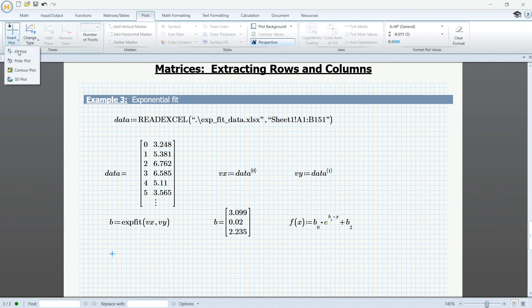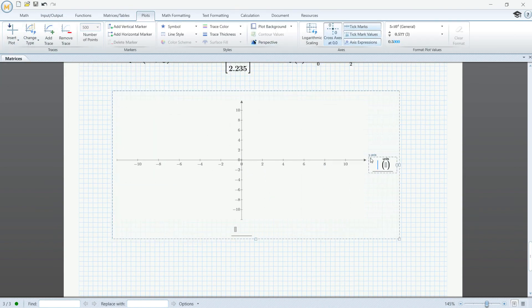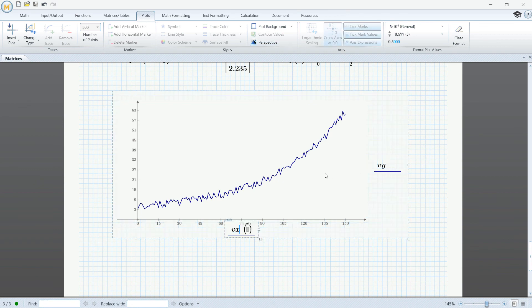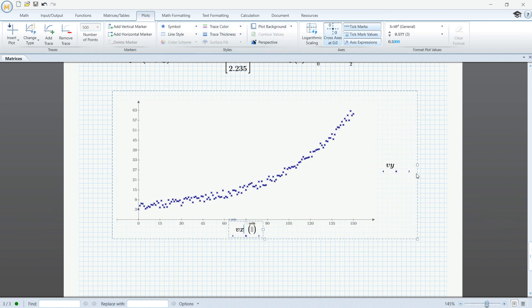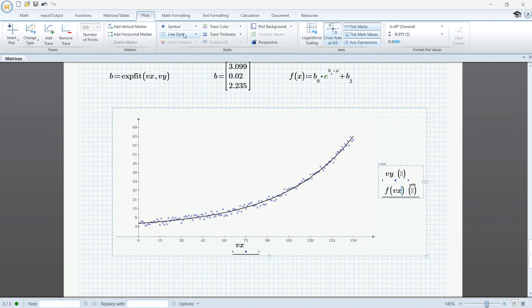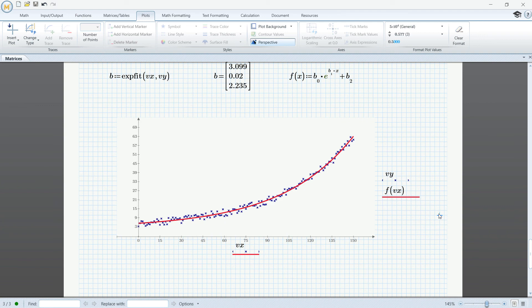The next step would be to go to the plots tab, insert plot XY plot and we're going to use this to visualize the data. So, first we can go here and plot the two vectors, VY and VX, so we can visualize the data points that we started from. I'm going to go here to symbol and remove the line so we can see the actual points and what we can do next is add another trace here and type F of VX which is the fitting function that we defined previously and we can go here and change the color of it and change the thickness so we can better view the results.